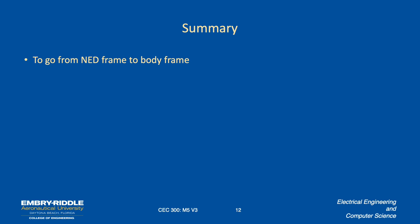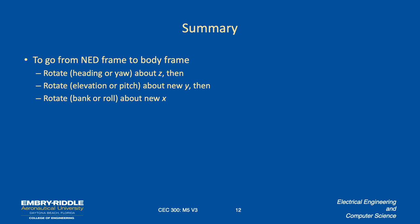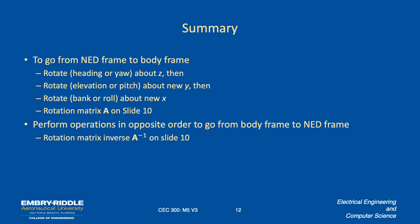To go from the northeast down frame to the body frame, we rotate the heading or yaw about Z. Then we rotate the elevation or pitch about the new Y. And then we rotate the bank or the roll about the new X. And that's the rotation matrix on slide 10. That's the matrix A. To go the other way, we do the operations in the opposite order. So we go from the body frame to the NED frame. We would actually rotate the pitch back, excuse me, the bank back and then the pitch down and then the yaw or the heading back to the orientation of the north. And that's done by the rotation matrix inverse operation. That's also on slide 10.